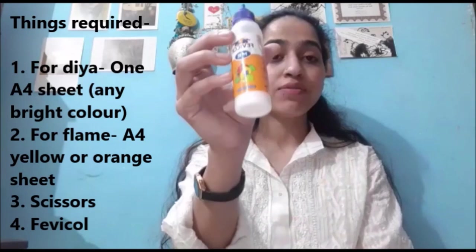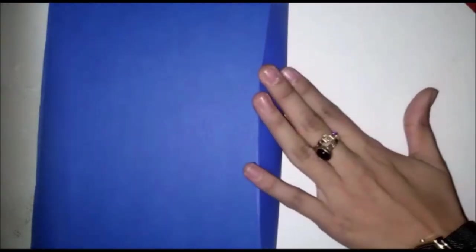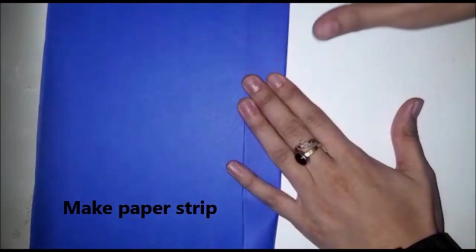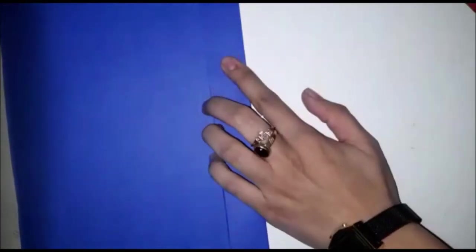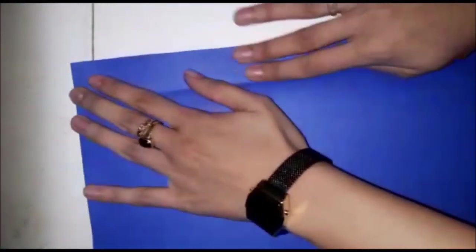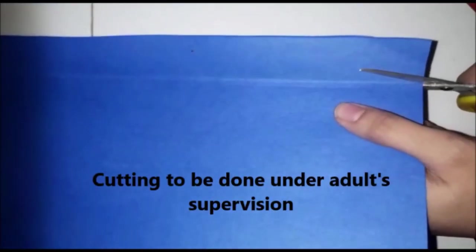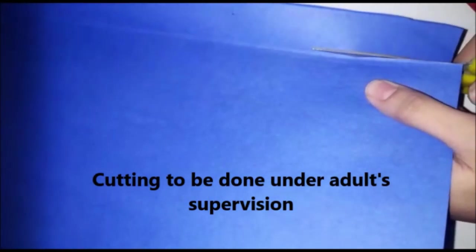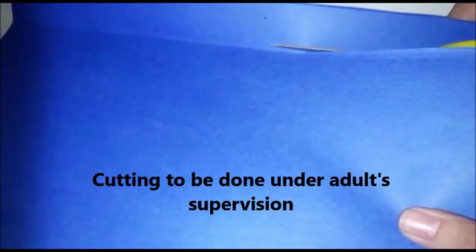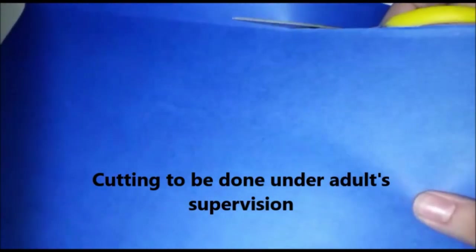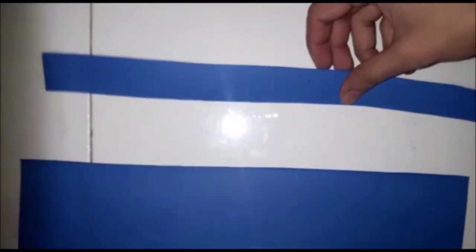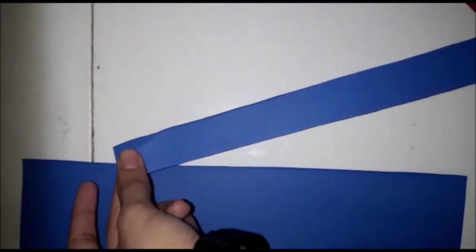And we need fevicol. Okay, so let's start kids, let's make diya. Okay children, our first step is we have to make paper strips and cut it slowly, slowly. And children, remember that you have to cut it under your parents' supervision.